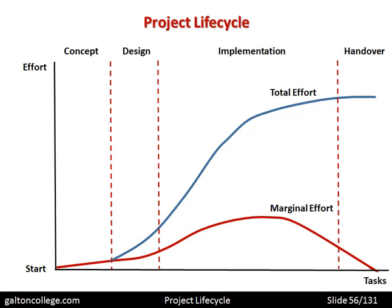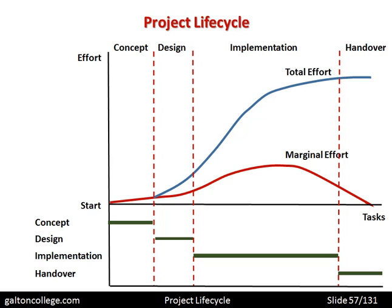We can also insert the four phases into this diagram: concept phase, design phase, implementation, and handover — similar to a Gantt chart. The green line represents concept, followed by the design or planning phase, then implementation, and finally handover. This gives us a way of looking at the project lifecycle and the effort required within each of the phases.